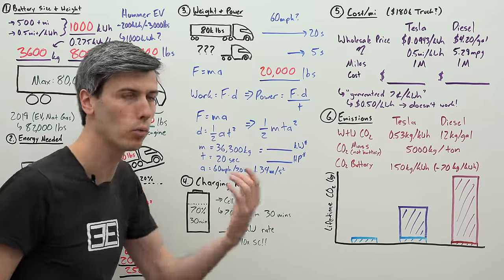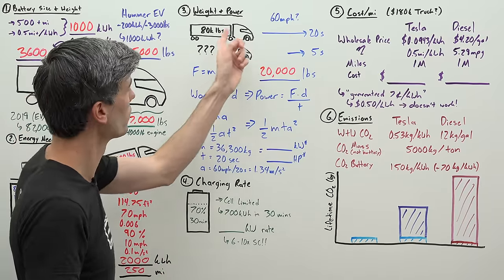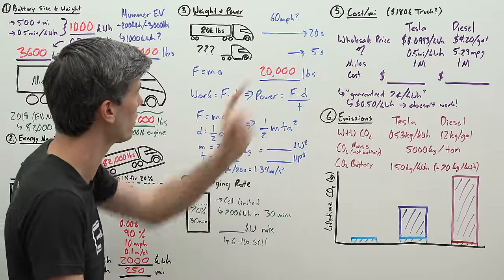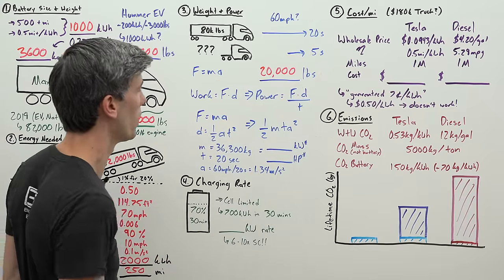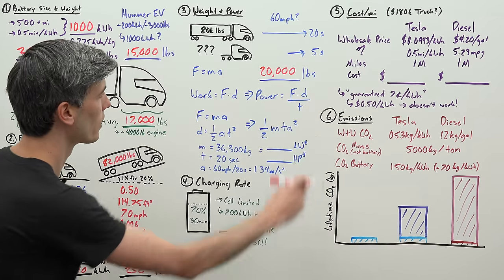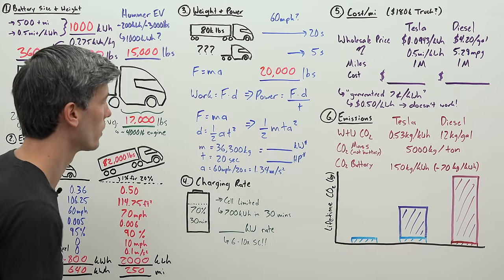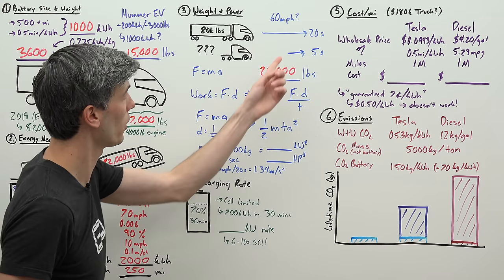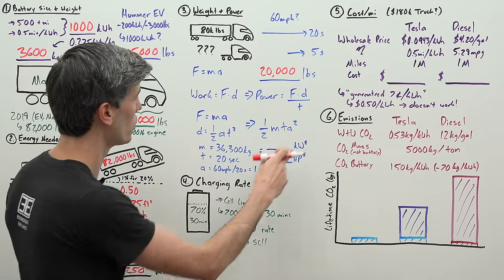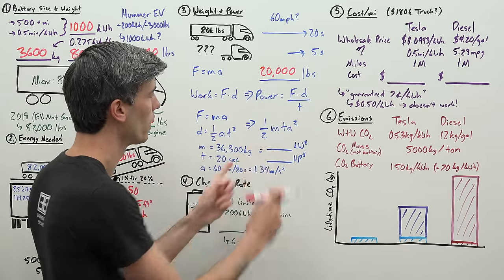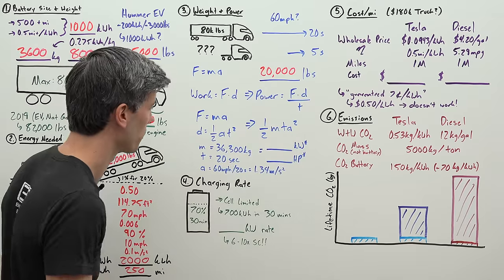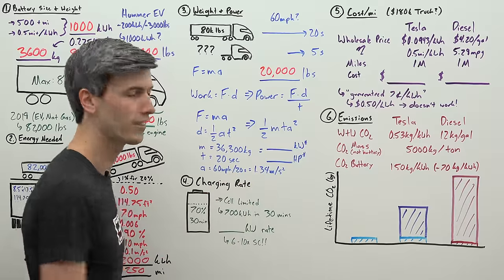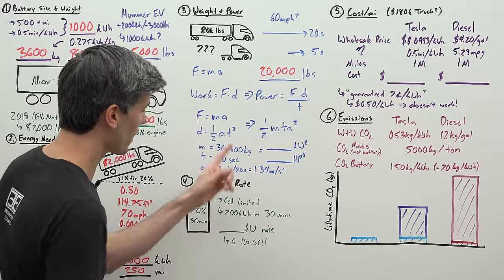Now we want to discover how much horsepower does this truck have. We know the amount of work done: work is force times distance. If you take that work and divide it by time, that gives you power. Power is work over time. We can substitute force for mass times acceleration, we can substitute distance for one-half acceleration times time squared, because we know our acceleration is 60 miles per hour in 20 seconds. You can simplify that down to one-half mass times time times acceleration squared.